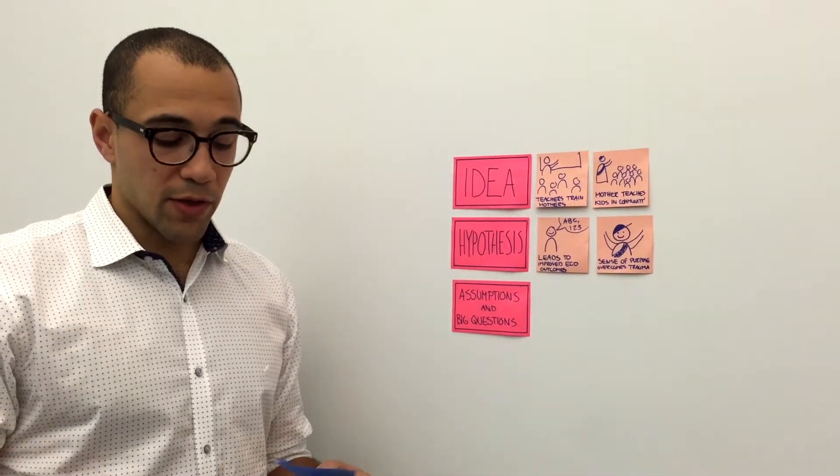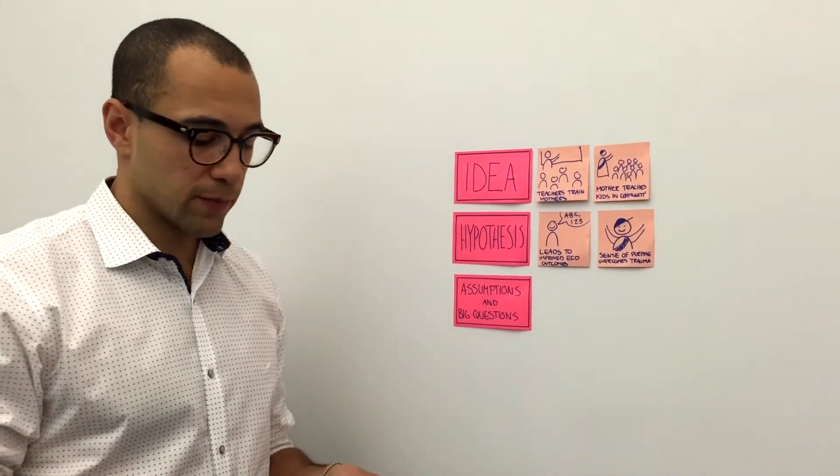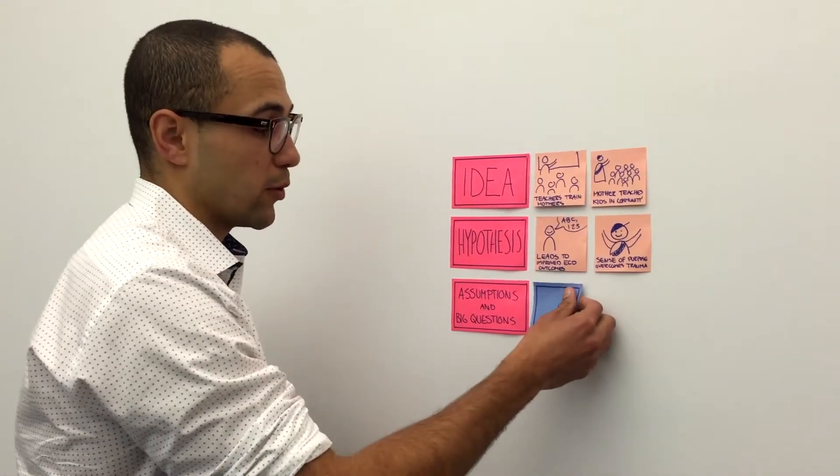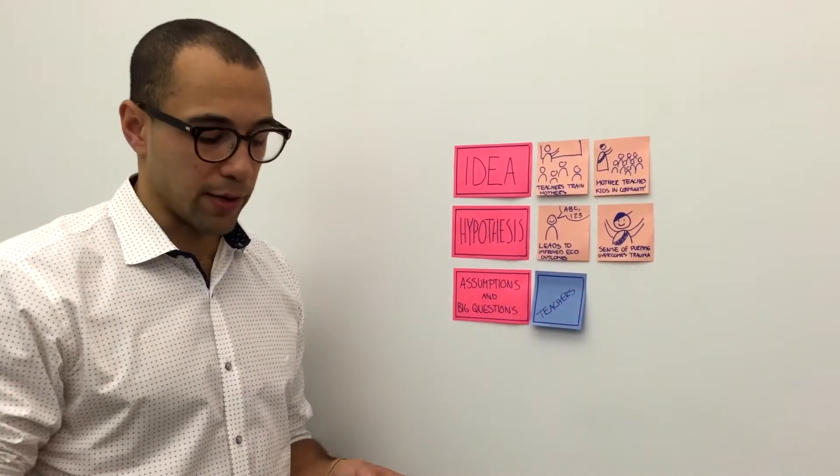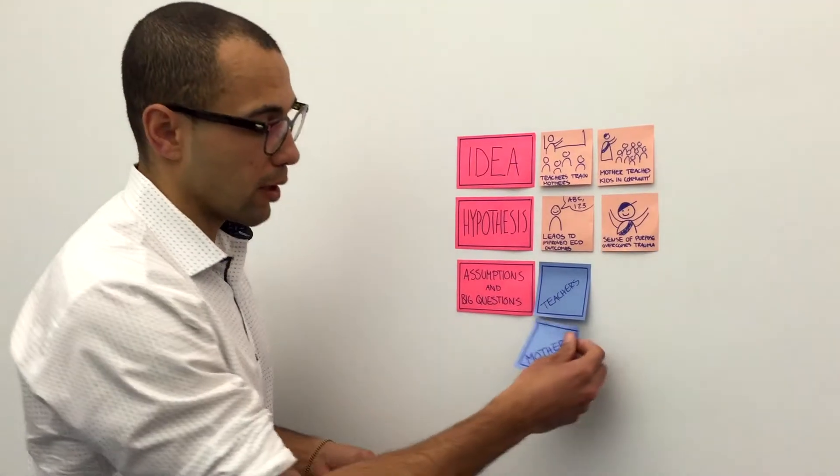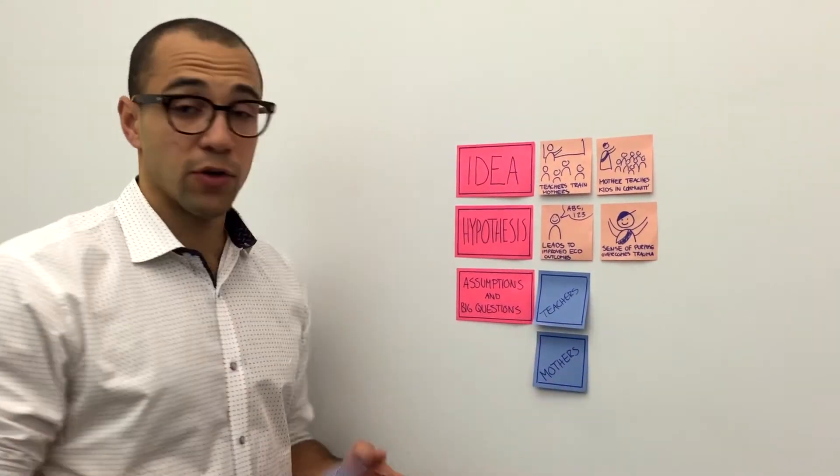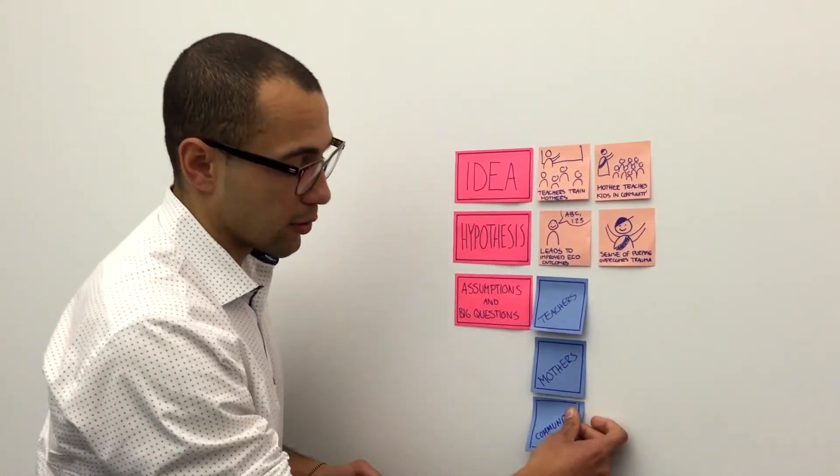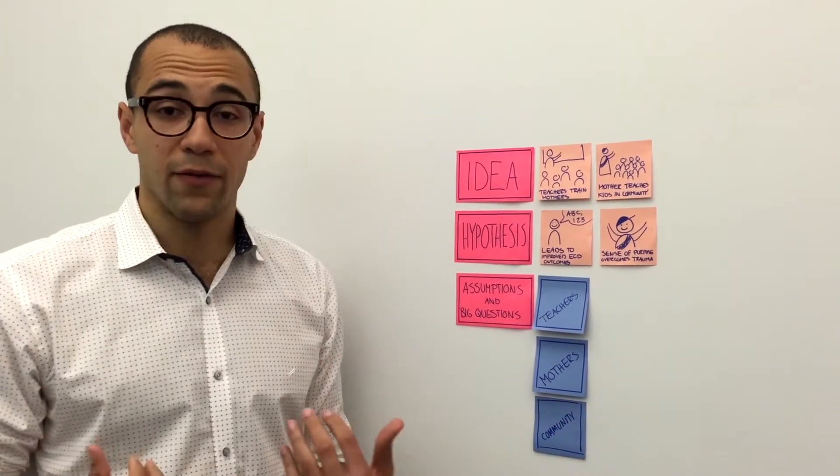So for this idea, we thought there were three different user groups. The first one are teachers, the people who are going to be training mothers in the program. The second user group are mothers. And the third user group is the community, parents and children who will be benefiting from the program.